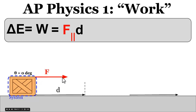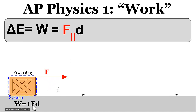If the force is to the right and the displacement is to the right — meaning there's no angle between them, so they're parallel — then the work done, or the energy added to the system, is just equal to the force times the displacement, and that's positive because the force is in the same direction as the displacement.